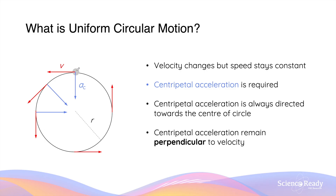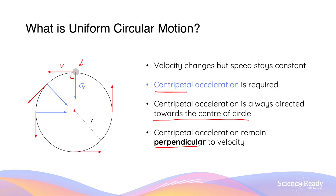The acceleration needed will be perpendicular to the velocity vector. For example, for the mass travelling at a given point going to the left, we need an acceleration to change the direction of velocity. This acceleration required in circular motion is called the centripetal acceleration. The word centripetal means centre-seeking. The acceleration vector always points towards the centre of the circle, and it remains perpendicular to the velocity vector.